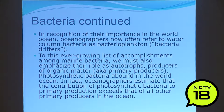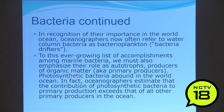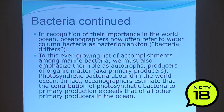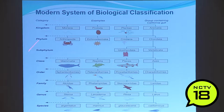Oceanographers now often refer to water-column bacteria as bacterioplankton — plankton being free-floating organisms. Bacteria can produce their own energy, packaging it into food like primary producers. Photosynthetic bacteria are found all over the world; those blue-green algae blooms are cyanobacteria. Oceanographers estimate that photosynthetic bacteria contribute more to primary production than all other primary producers combined. If we're going to adapt to climate change, we'll have to do it through bacteria.